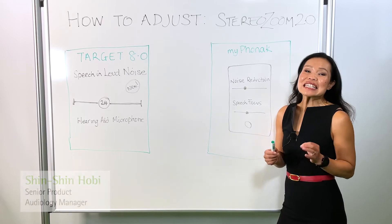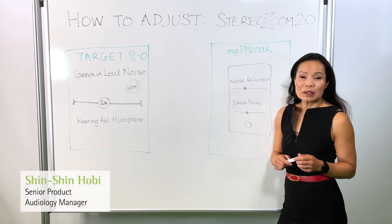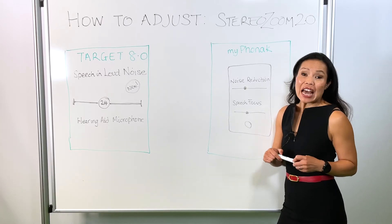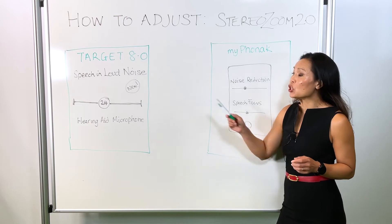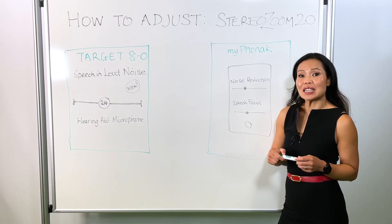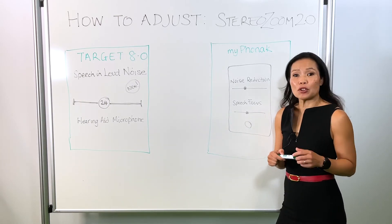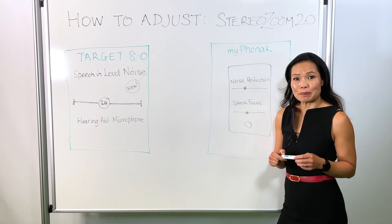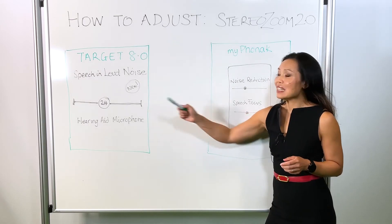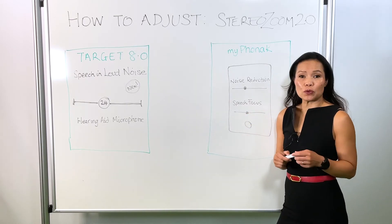How to adjust stereo zoom 2.0. For a hearing care professional, they now have access to a new hearing aid microphone slider in the Speech in Loud Noise program. The slider is set at a default level of 24.